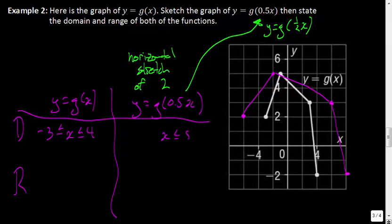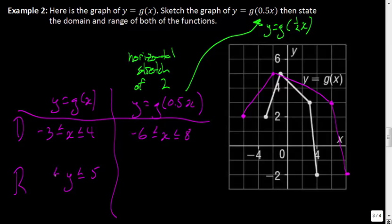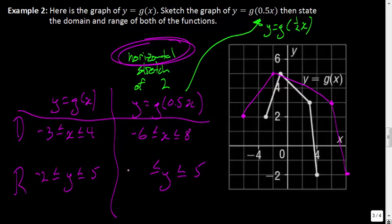Those are my x values for the domain of the new function. The range — has the graph changed in terms of y values? Well, we had a y value up at about 5 and it went down to negative 2. So y is between negative 2 and 5. And because we're doing horizontal compressions and stretches, we don't have to worry about our y's — the range stays the same for both functions.